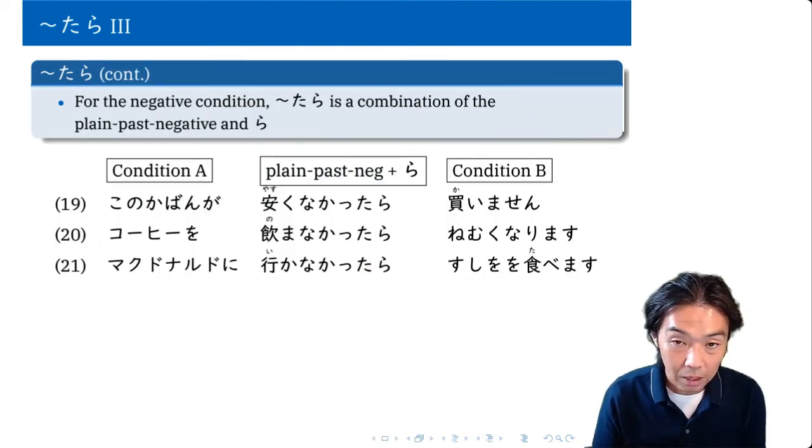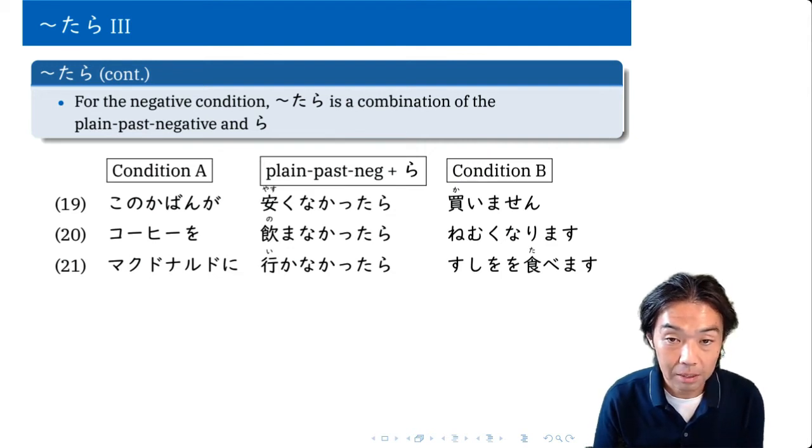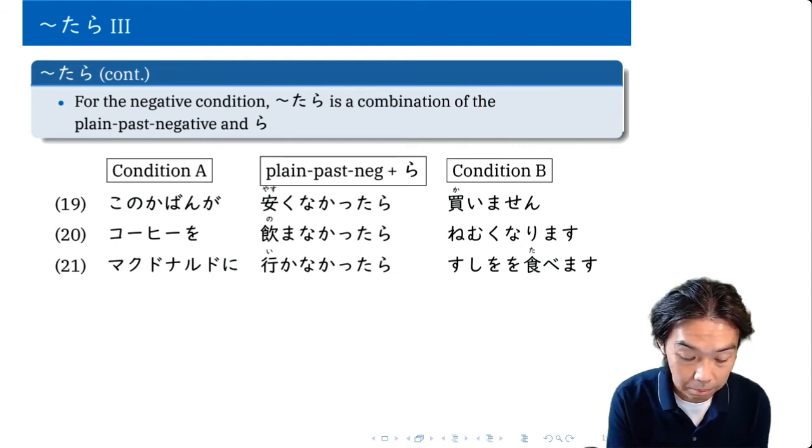So for the negative, sometimes you want to say if something didn't happen, or if something doesn't happen, I will do this. For that, we use the plain past negative.